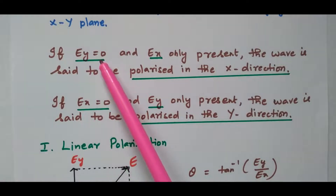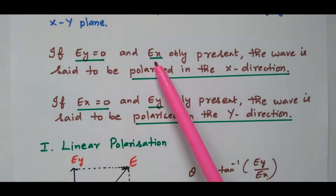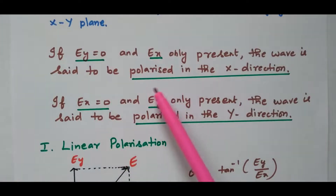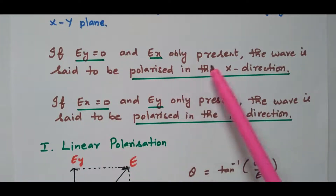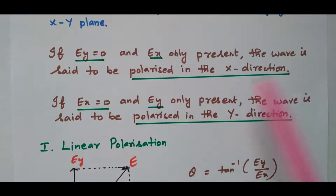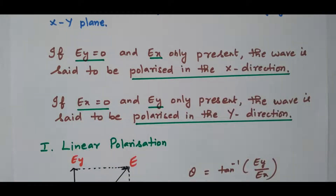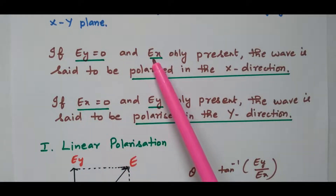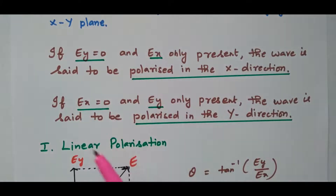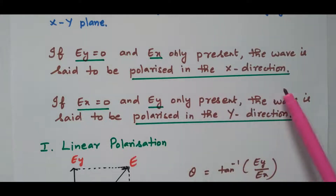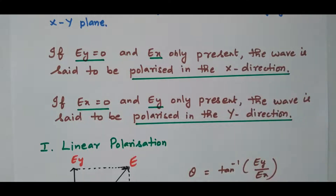Suppose if Ey is 0 and only Ex is available, then the wave is said to be polarized in the x-direction. If Ey is 0 and only Ex is available, that wave is polarized in the x-direction — only in x-direction, y-direction is not available.